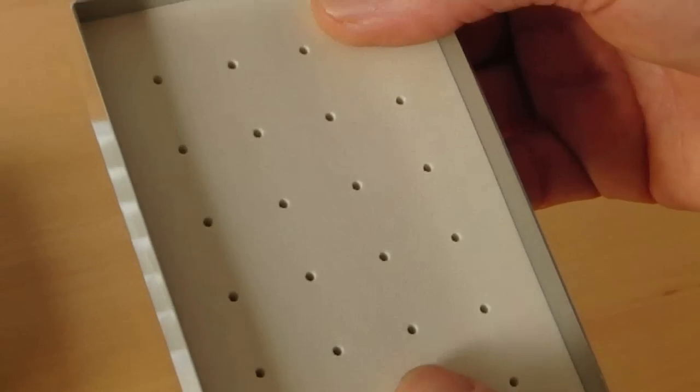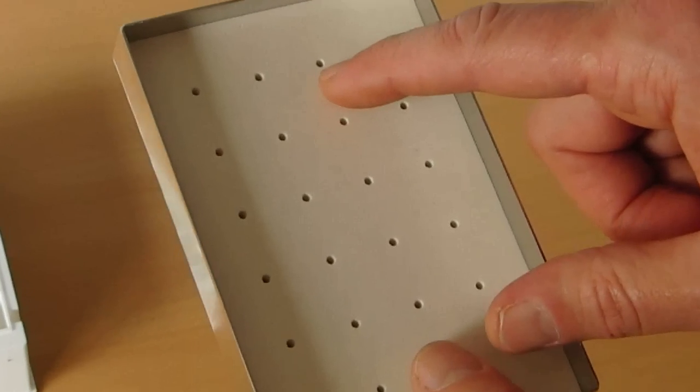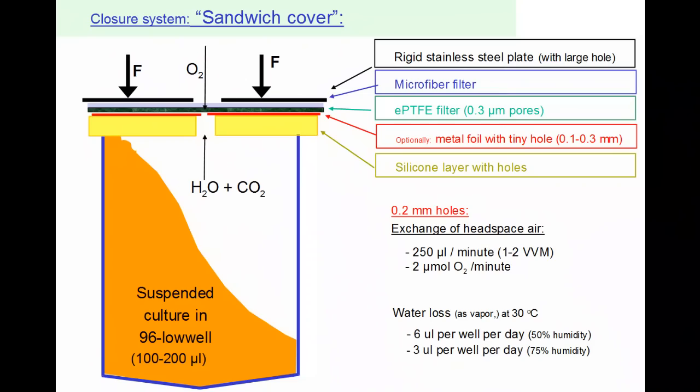The last component is a silicone layer with small holes above the center of each well. The main purpose of the silicone layer is to prevent cross-contamination and to limit evaporation. The size of the hole determines the supply rate of fresh air to the culture and also the evaporation rate.